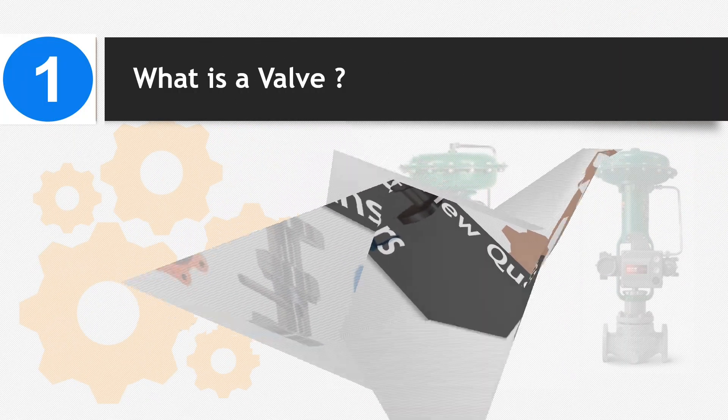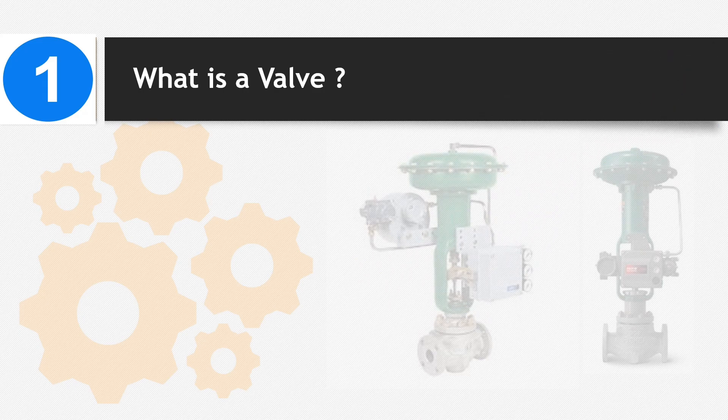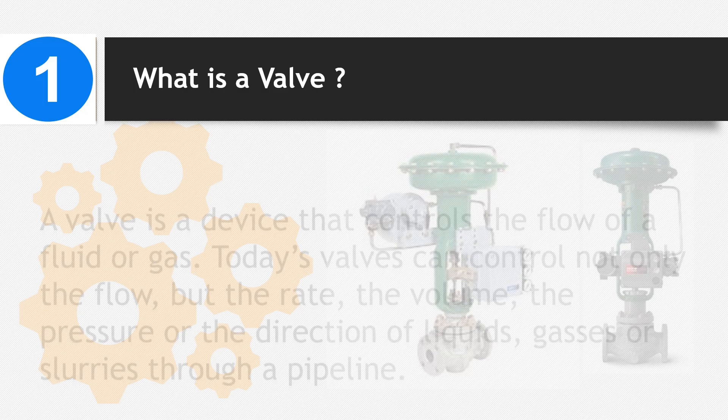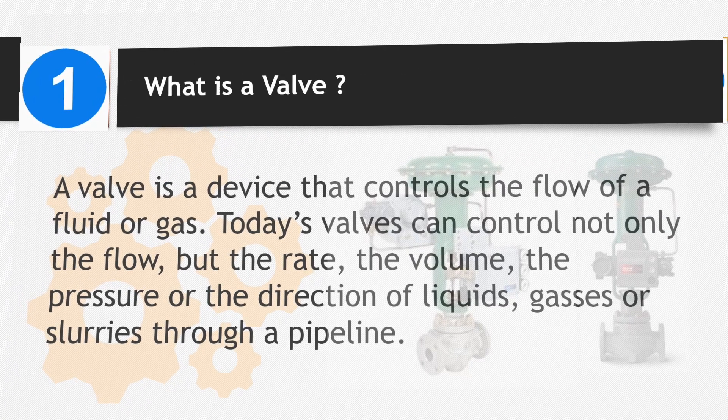Number 1: What is a valve? A valve is a device that controls the flow of a fluid or gas. Today's valves can control not only the flow, but the rate, the volume, the pressure, or the direction of liquids, gases, or slurries through a pipeline.